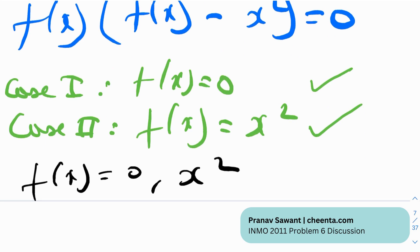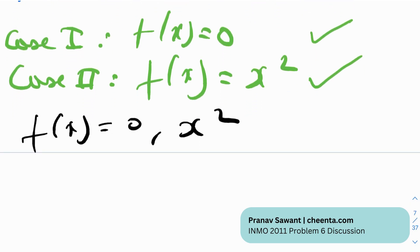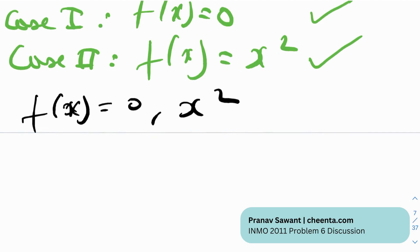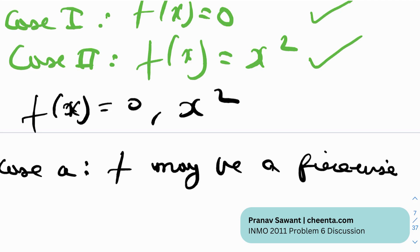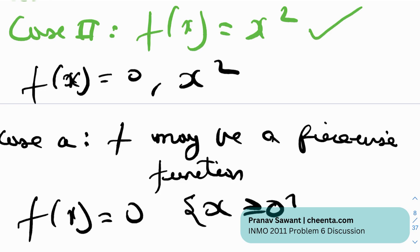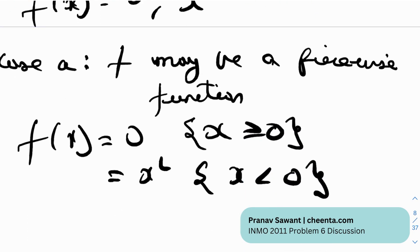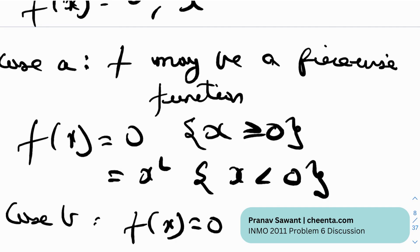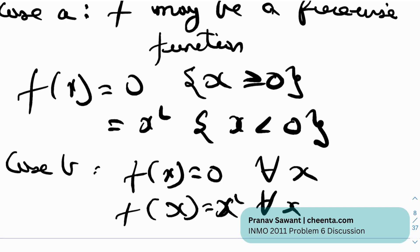But do we stop there? No, obviously not. It seems I've done everything correctly using substitution, but what's the problem? Well, from f(x)·(f(x)−x²) = 0, we get two cases. But this raises an additional possibility: f may be a piecewise function — for example, f(x) = 0 for x ≥ 0 and f(x) = x² for x < 0. We need to rule this out.